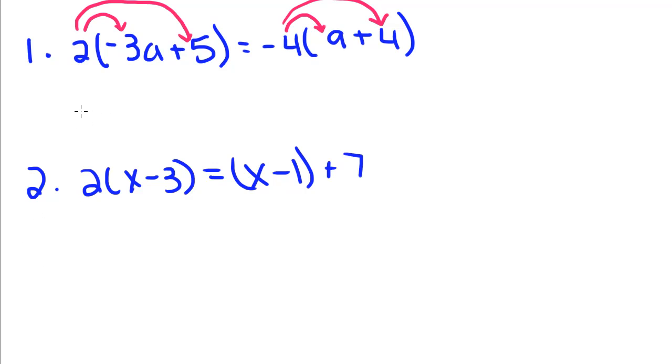So 2 times negative 3a gives me negative 6a, plus 2 times 5, which is 10, is equal to negative 4 times 9, which is negative 36, minus 4 times 4, which is 16.